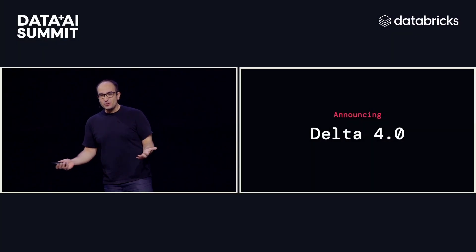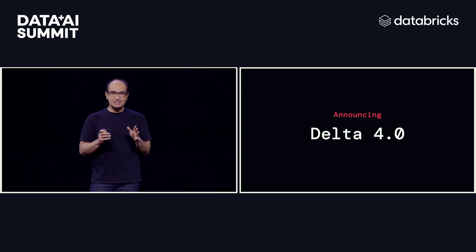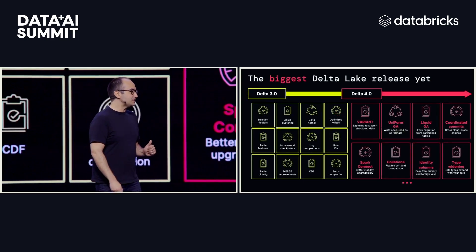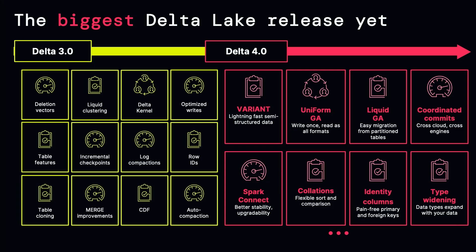That integration is super awesome. So how do we top that? By going forward — to Delta 4.0. We have the branch cut; it's available. Delta 4.0 is the biggest change in Delta since its history. It's jam-packed with new features and functionality, things like coordinated commits, collations, and all sorts of new functionality that make it easier to work with various different types of data sets.